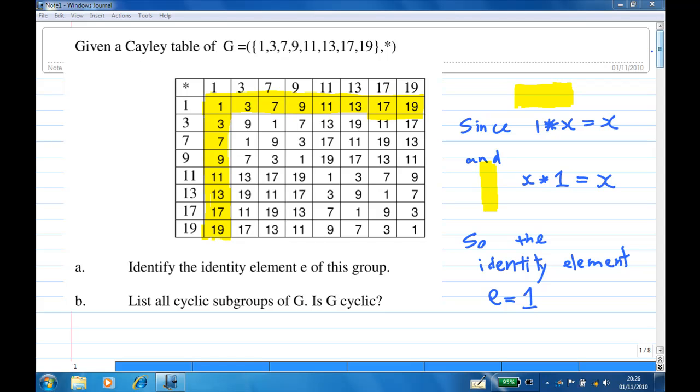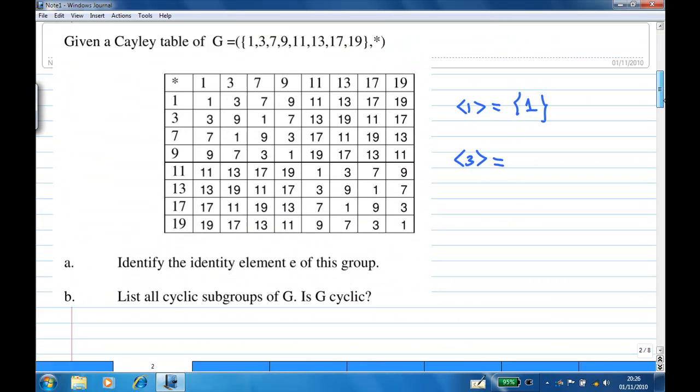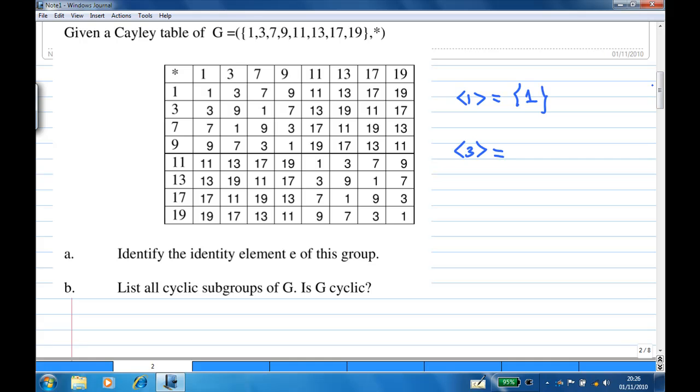Next, we are going to list out all the cyclic subgroups of G, and then decide whether G is cyclic. First, the cyclic subgroup generated by 1 is just 1 only, since 1 star 1 is always equal to 1.